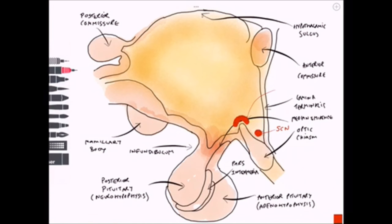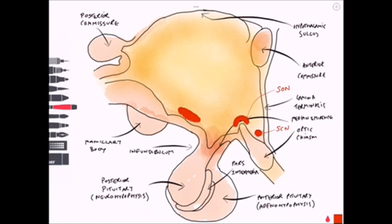Then we have the supraoptic nucleus, the SON. This is important for the production of antidiuretic hormone, which is important for controlling small blood vessel contraction, raises blood pressure, and so on.